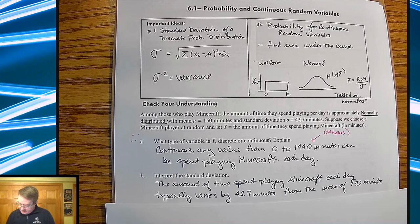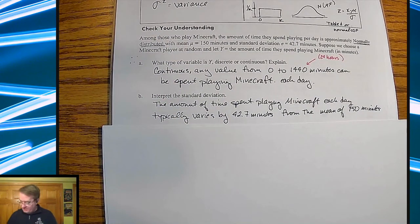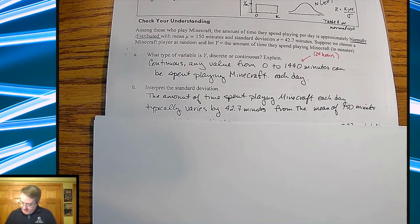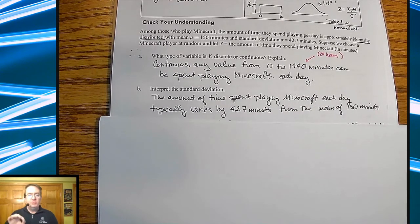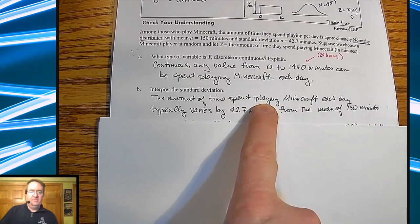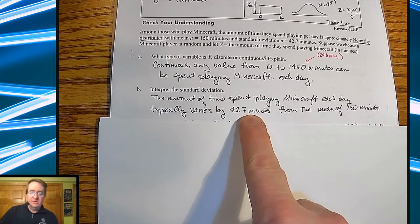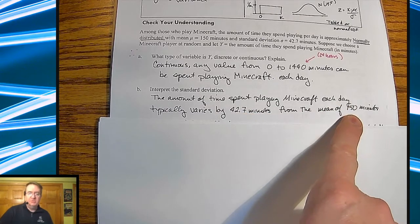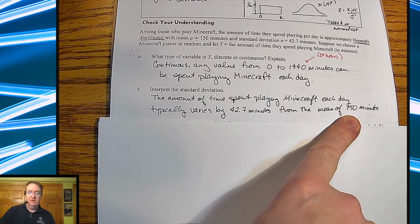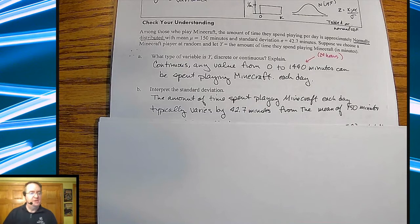Interpret standard deviation. So the standard deviation, remember this definition is one of those things you kind of have to have integrated into your head. The amount of time spent playing Minecraft each day typically varies by 42.7 minutes from the mean of 150 minutes. So you have to explain what we're talking about. You have to say it typically varies. State the standard deviation. And then from what? It's always going to be the mean.